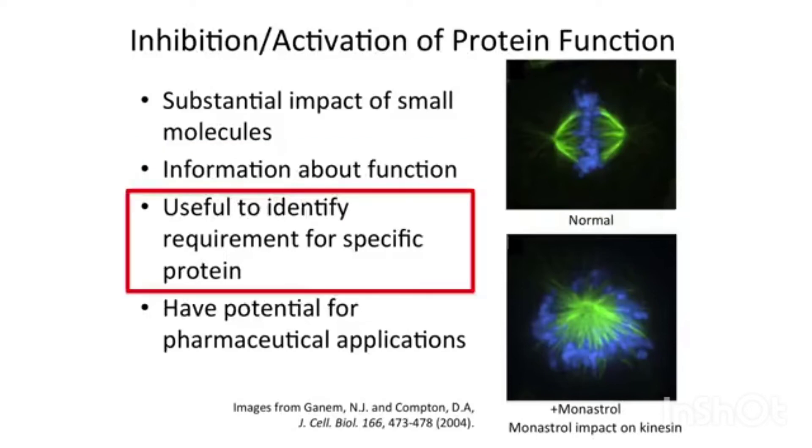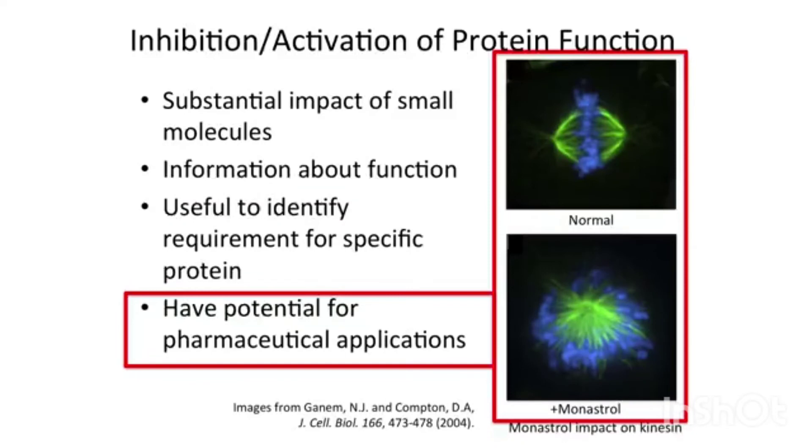Kinesin, for example, was thought to be involved in the separation of the chromosomes during cell division. You can see in the top picture the normal function of kinesin. There's something called monostrol that binds to kinesin and just blows it apart in terms of its function and literally blows apart the separation of the chromosomes during cell division. Some of these compounds can have potential for pharmaceutical applications. Monostrol is a good example where it impacts kinesin's function and can actually kill the cell.